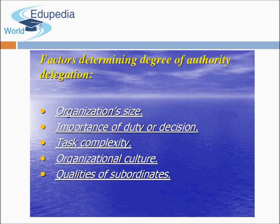Organizational culture and quality of subordinates are also important factors in deciding how much responsibility, authority, and accountability can be given to a person. Delegation of authority is also about centralization and decentralization. If subordinates are capable and the organization is big, decentralize power so decisions are made at every level. If the organization is small or employees are less capable, keep powers centralized.